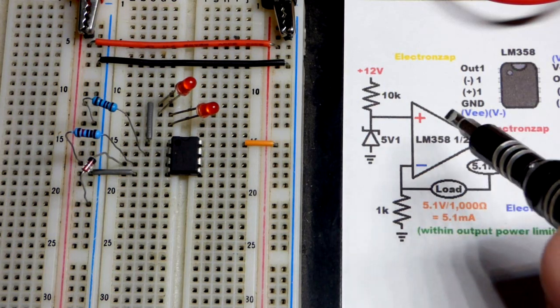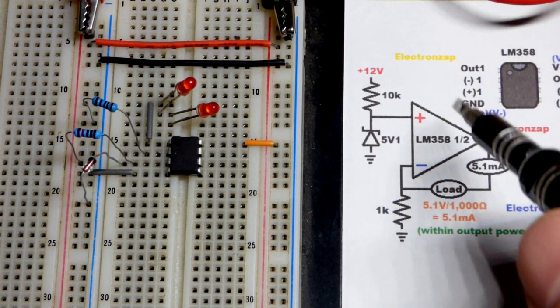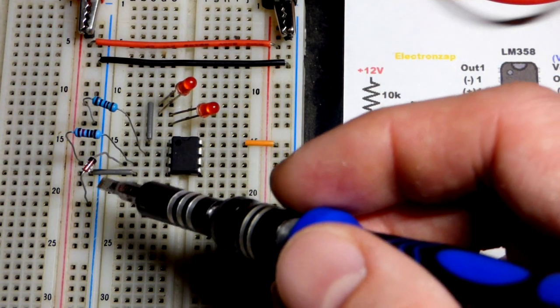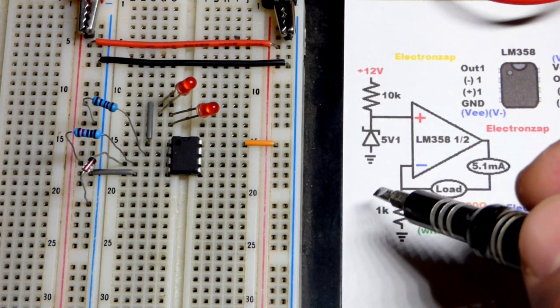Now we have the schematic diagram. We are powering the LM358 even though I'm not showing it on the schematic. Sometimes you won't see it. So that's 12 volts across it like the rest of the circuit. You can see 12 volts up there.